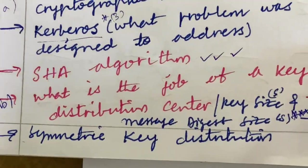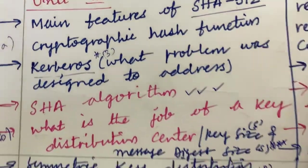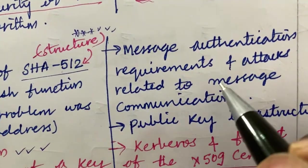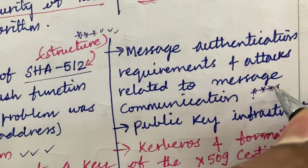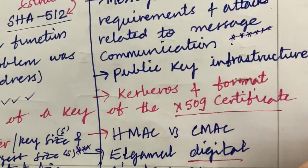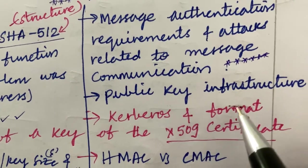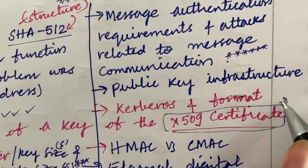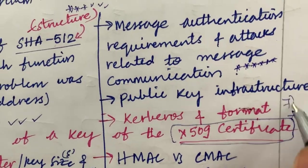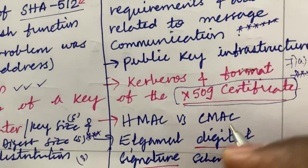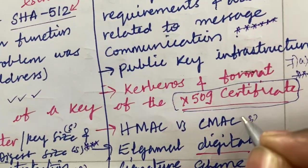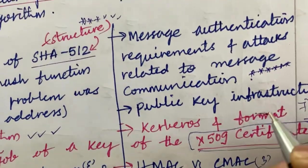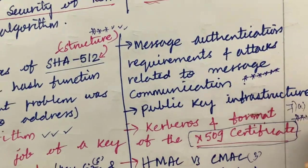Symmetric key distribution is also a 3-mark question. Looking at the 7th question: message authentication requirements and attacks related to message communication have been asked several times based on my analysis of previous year question papers. Public key infrastructure, Kerberos, and the format of the X.509 certificate are very important questions we can expect. HMAC versus CMAC is a 3-mark question, and the ElGamal digital signature scheme may be a 2-mark question. These may appear as 7A and 7B.